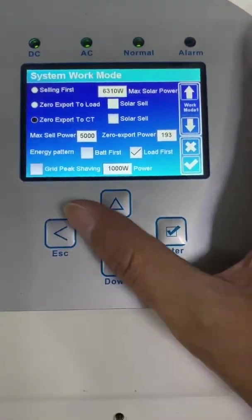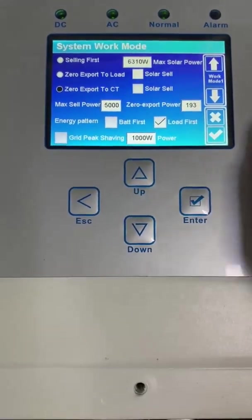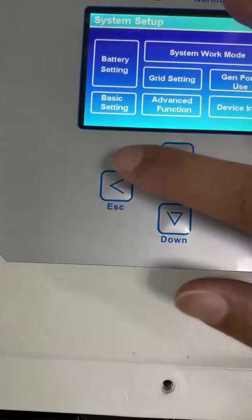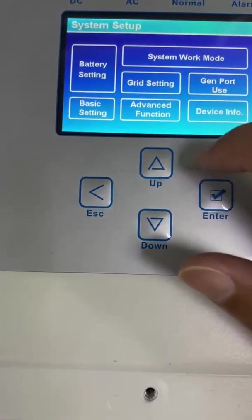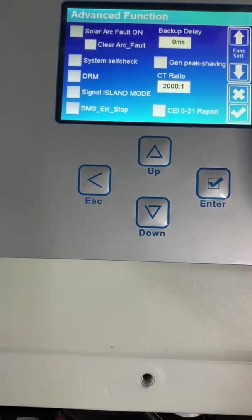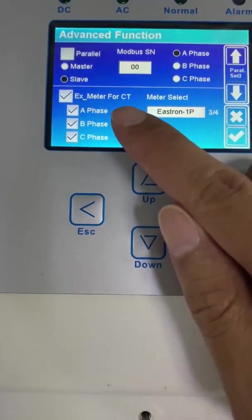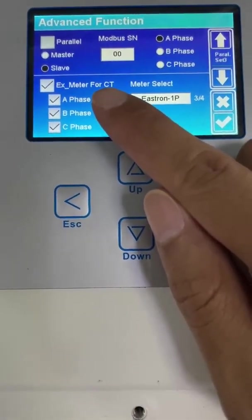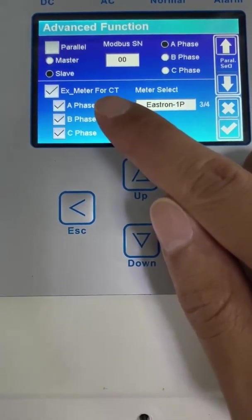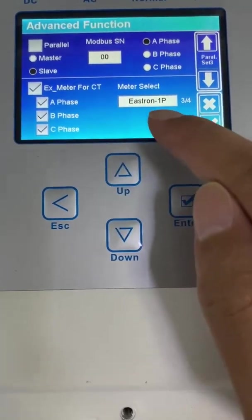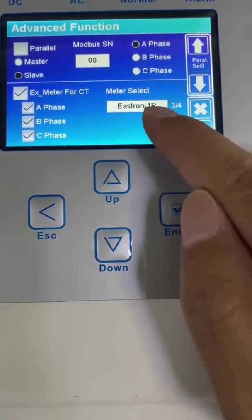Okay, let's see the configuration. We need to go to here. Here you will see the extra meter for CT. This Eastron means that you will use the energy meter to replace the CT.